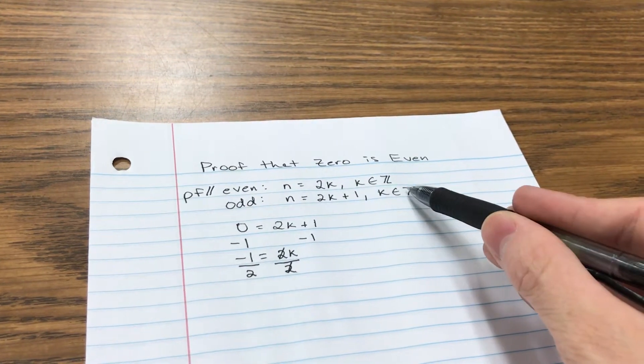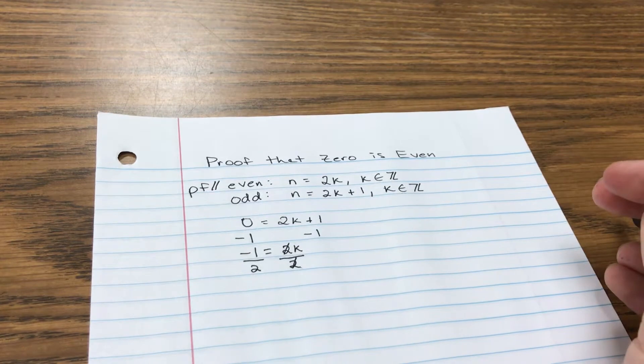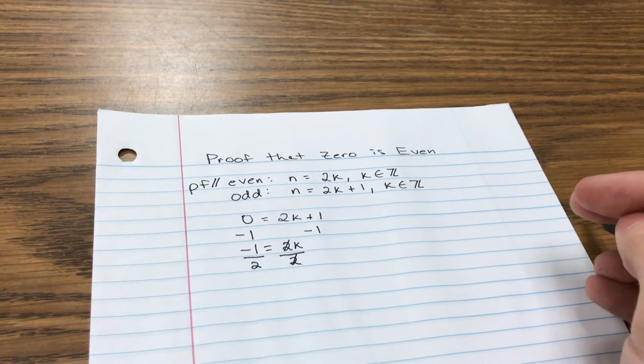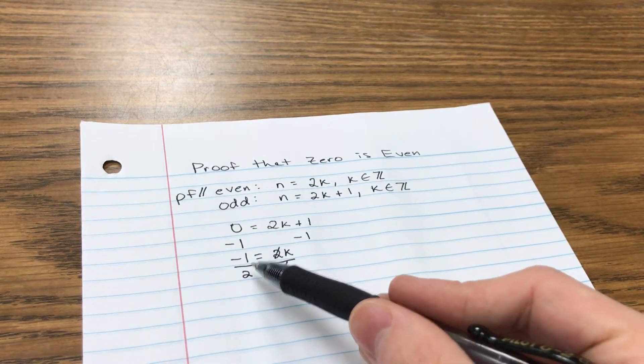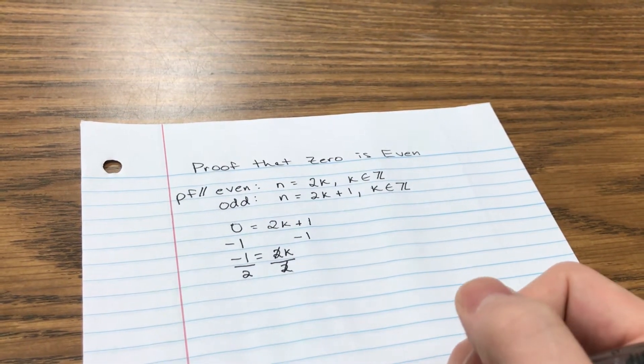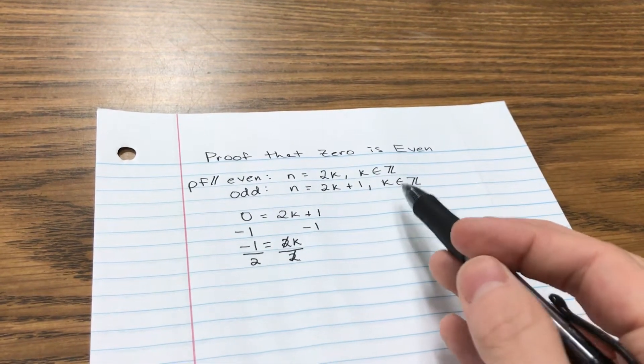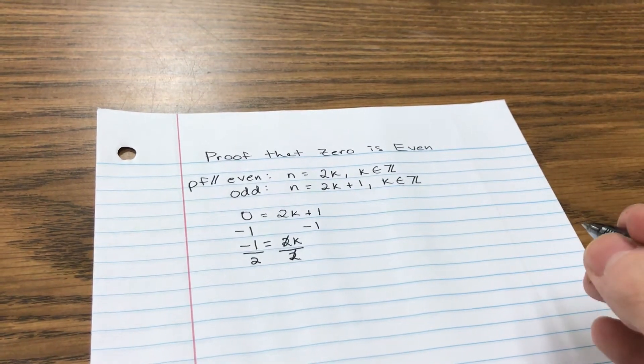Remember what our condition was? K had to be an integer. That means it has to be some kind of positive or negative whole number or 0. And this negative 1 half is not an integer. It's a rational number, but it's not a whole number, so it can't possibly be an integer.